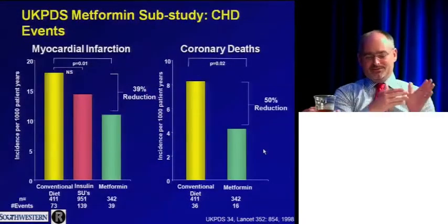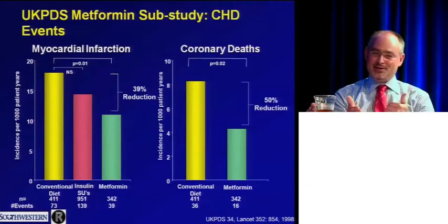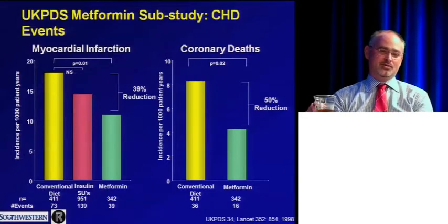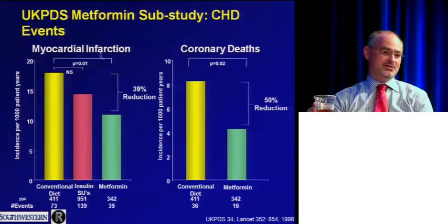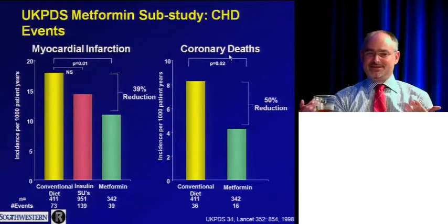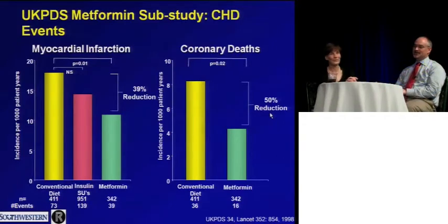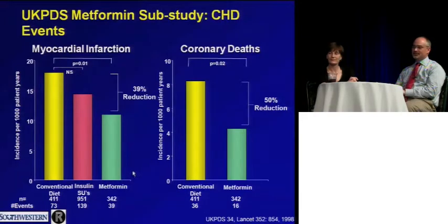Despite this uncertainty, one of the most certain things is that metformin should be the first-line drug. From the UKPDS sub-study of overweight patients, metformin compared with usual care showed a 40% reduction in MI and a 50% reduction in mortality — statistically significant. These are inevitably overestimates with small event numbers, but it's a ray of hope. Metformin is well-tolerated, safe, now generic and cheap — and it's the only oral drug recommended to be continued when starting insulin therapy.